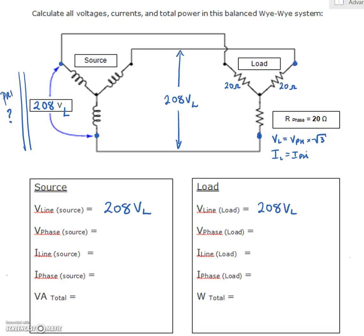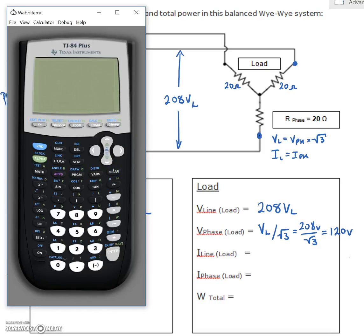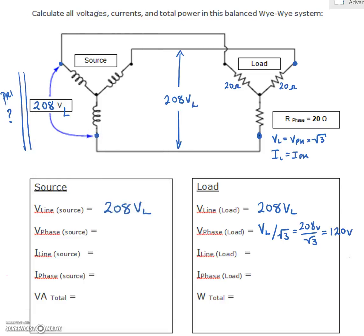So what do we need to do next? We need to find our phase voltage. Our phase voltage will be our line voltage divided by root 3. So we've got 208 volts divided by root 3, and we know that that's going to give us 120 volts. Just to confirm, we have 208 volts. We're going to divide by the square root of 3. That gives us 120 volts. Beautiful.